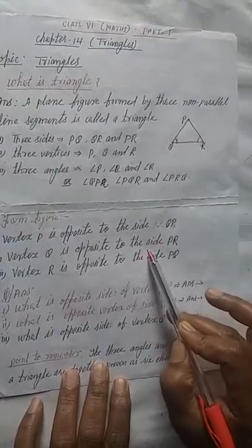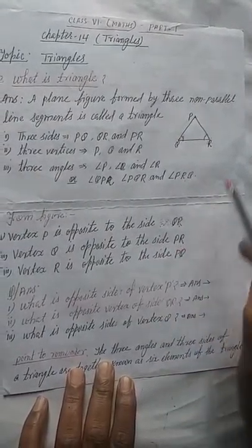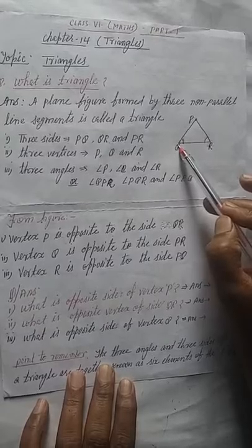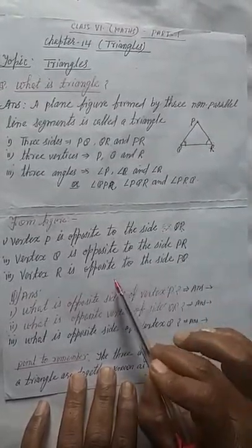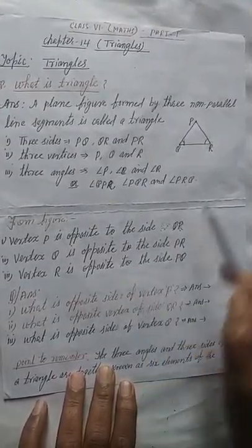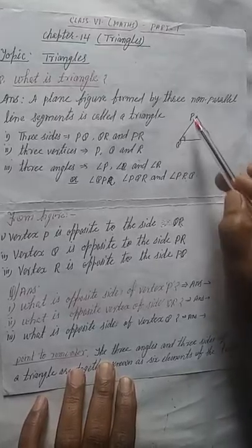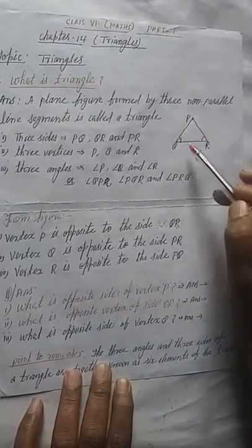Similarly, what is the opposite vertex of side PR? So this is Q. Similarly, we can say, what is the opposite vertex of side PQ? So this is R. And we can say,